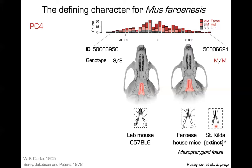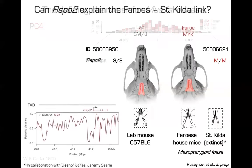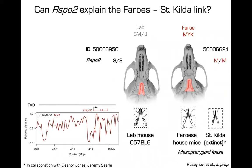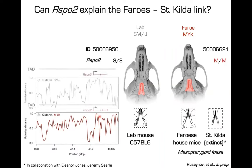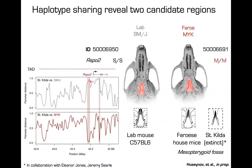R-spondin 2 is famously known for causing limb deformations when knocked out — animals lose all their limbs — but it wasn't particularly well known for controlling skull traits. Looking at the morphing changes, the zygomatic arches are mostly changed by this PC. Mice carrying two copies of the Faroese allele recapitulate the Faroese phenotype. When R-spondin 2 itself is knocked out, it shows a subtle phenotype — inability to form the hard palate, as revealed by cartilage Alcian blue staining.